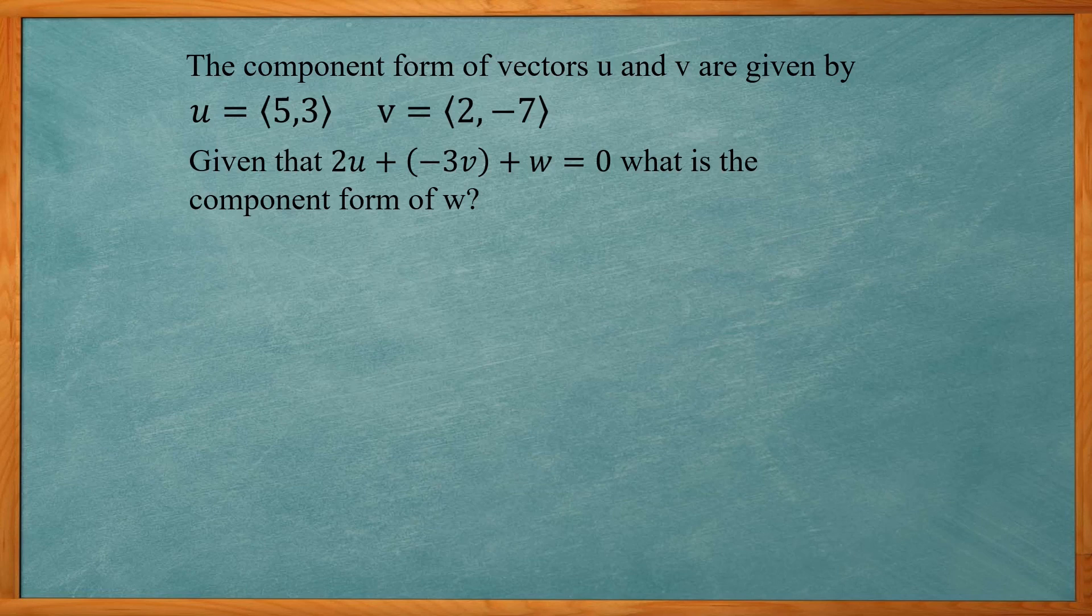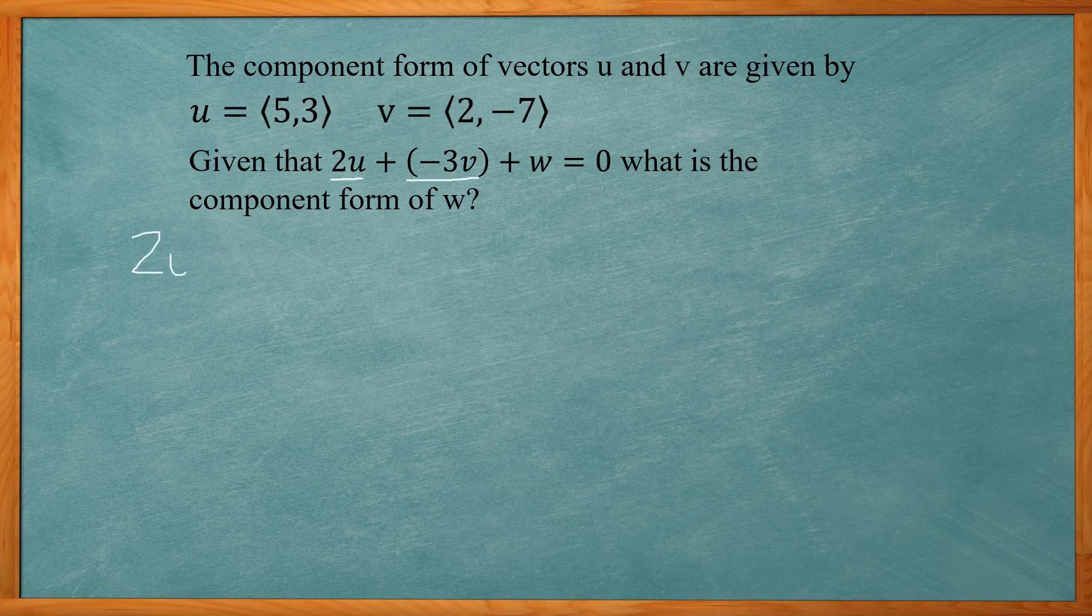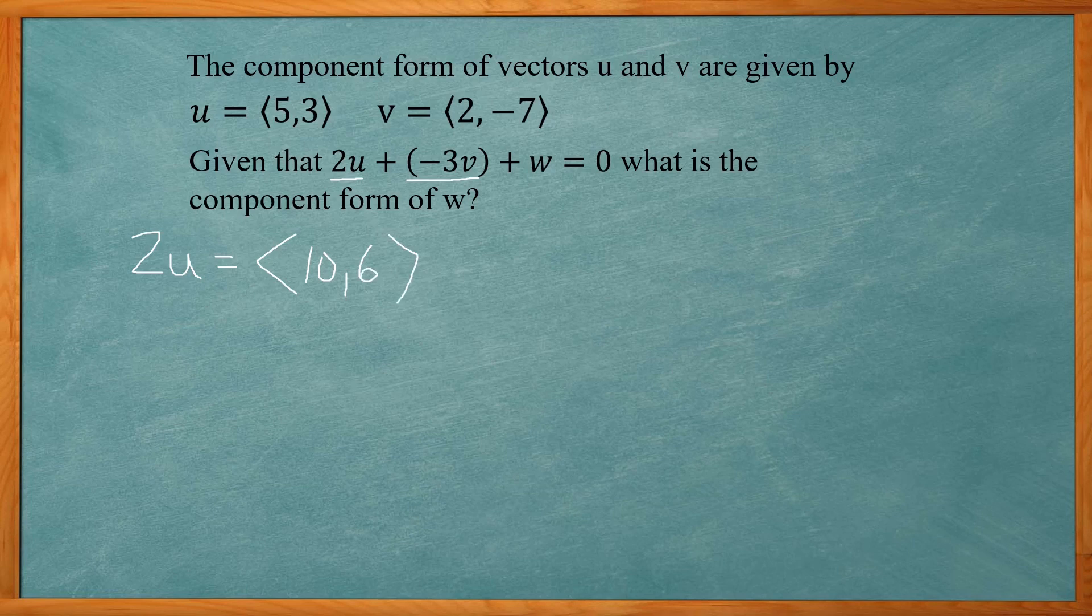So we need to add these two together, 2U and negative 3V. So we're going to find 2U. You simply multiply each number by 2. So 5 times 2 is 10, 3 times 2 is 6. So we have 2U is equal to (10, 6).